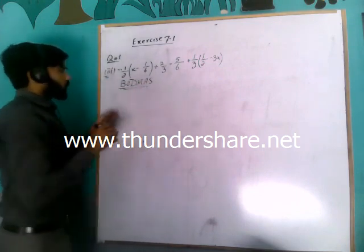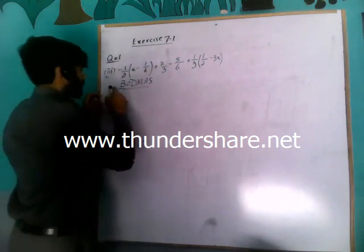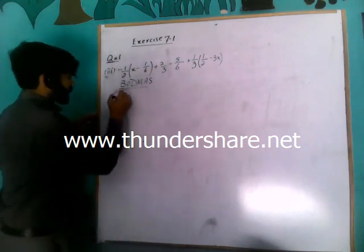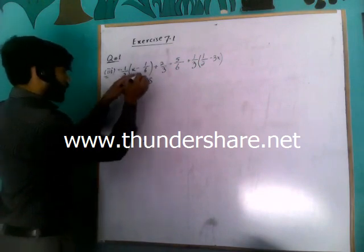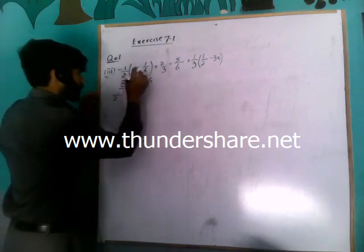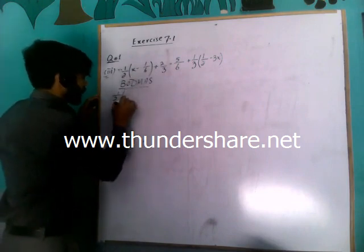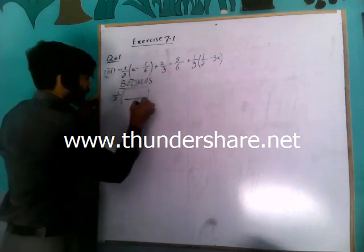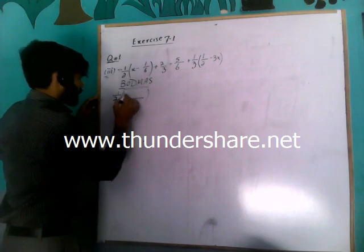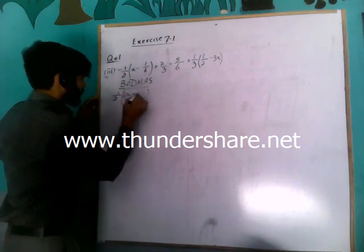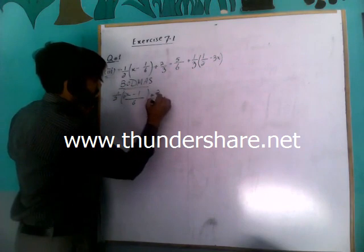According to BODMAS law, first of all we will solve the bracket. The bracket one over two will come as it is. Now first you will solve inside the bracket — take LCM. LCM is 6. LCM will multiply with the first term, so 6x will come here, minus 1, plus 2 over 3 is equal to 5 over 6 plus 1 over 3.